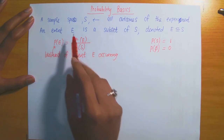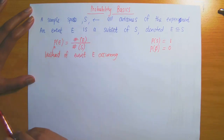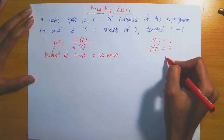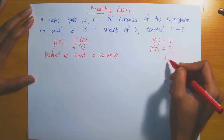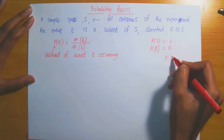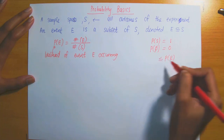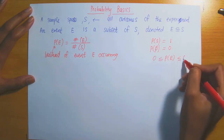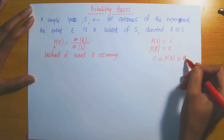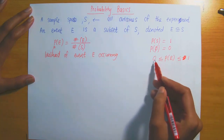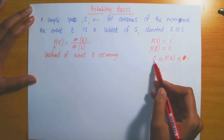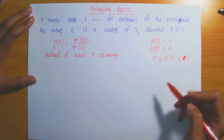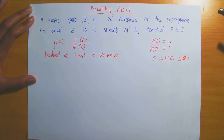Now, since event E was a subset of the total number of outcomes, the probability of E occurring is sandwiched between 0 and 1, where 0 means the event will not occur and 1 means the event will definitely occur.